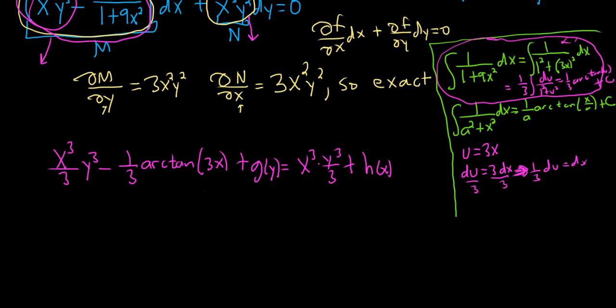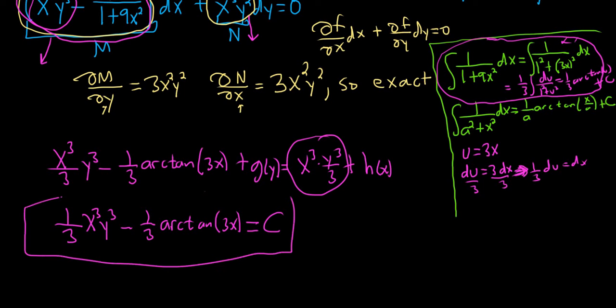Okay, now we can write the answer down. So to write the answer down, you just read it left to right and you write down what you see. So this is 1/3 x³ y³ minus 1/3 arctan 3x. G of y, we don't write it. And then we already wrote this down, so we don't write it again. And then you set your final answer equal to c always, every single time.